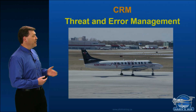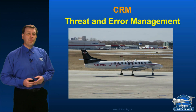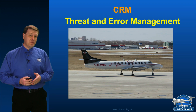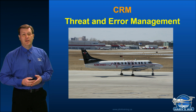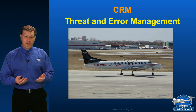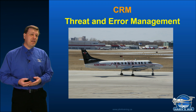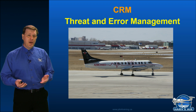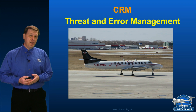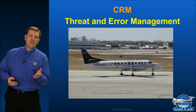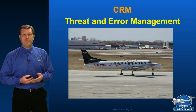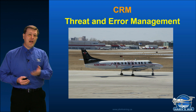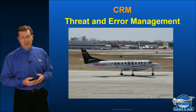Threats and Error Management. Whenever we fly, there are going to be certain threats that we can sometimes identify prior to flying. One big one is weather — something that's maybe anticipated. We could look at it ahead of time and say we're expecting the weather to be this way, but then a threat can also become unanticipated — for instance, weather that's not in the forecast, or perhaps some sort of a mechanical failure.